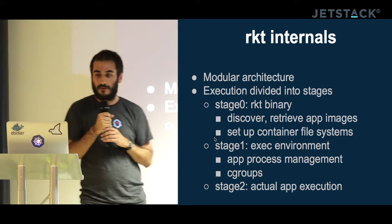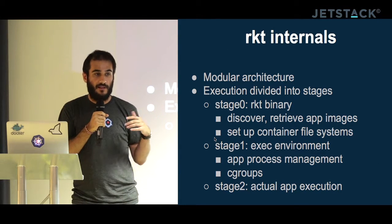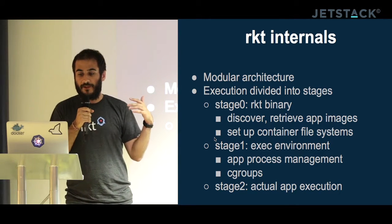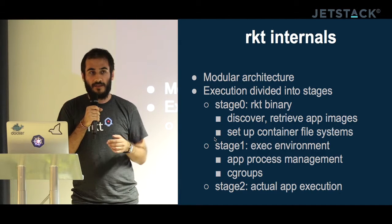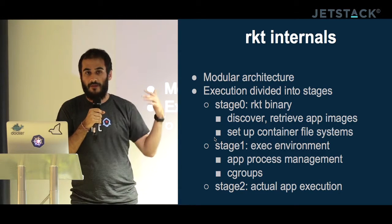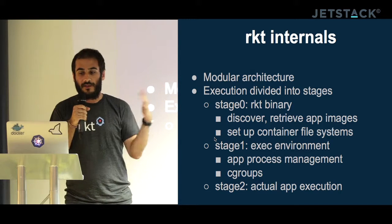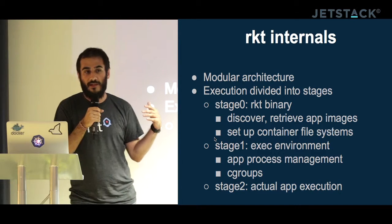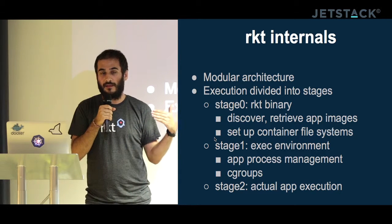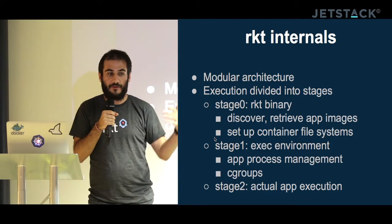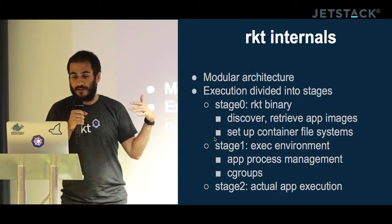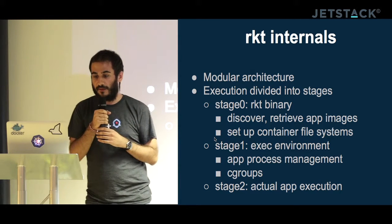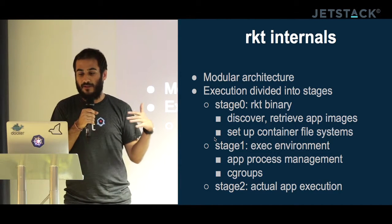Internally Rocket has a modular architecture divided into three stages. Stage zero is the actual Rocket binary, which performs discovery and retrieval of images and sets up the container filesystems. Stage one is the execution environment, which manages app processes and applies cgroups. Stage two is the actual app execution. The idea is that you can swap stage ones — for example, to do something different.